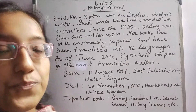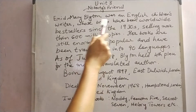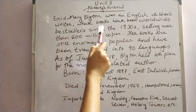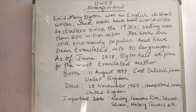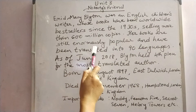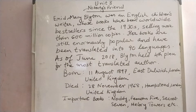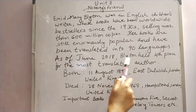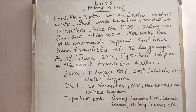Let's look at the board. Nobody's Friend, Unit 8, by Enid Mary Blyton. Enid Mary Blyton was an English children's writer whose books have been worldwide bestsellers since the 1930s, selling more than 600 million copies. Her books are still enormously popular and have been translated into 90 languages. As of June 2018, Blyton held 4th place for the most translated author — she is quite famous.